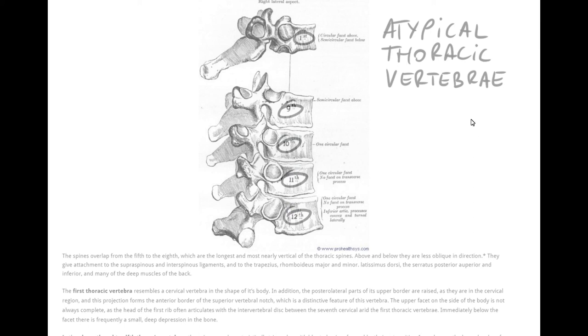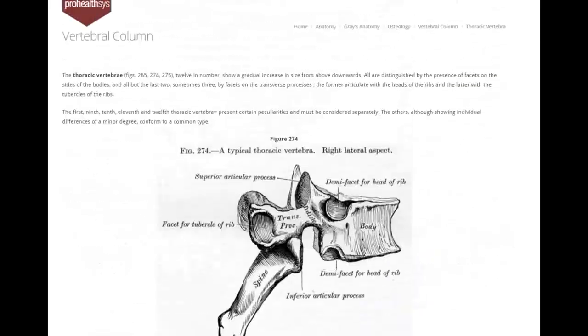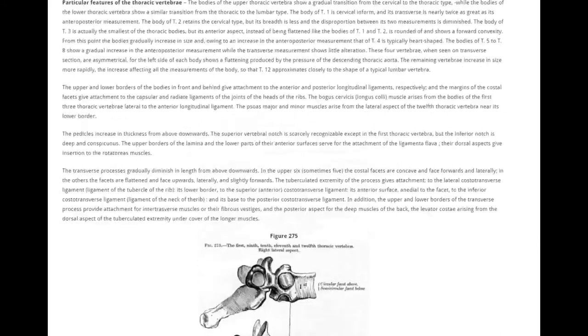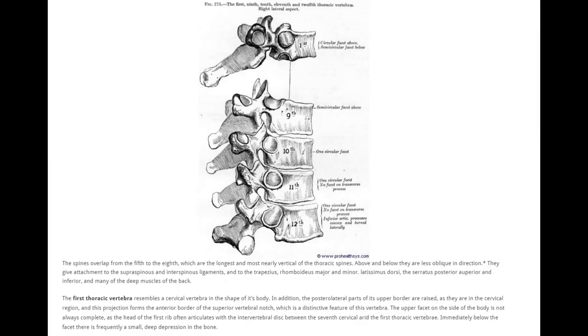This is it for this time. On our next video we will discuss ribs and how they articulate with thoracic vertebrae. Don't forget to check out ProHealth Systems homepage. All this information can be found on ProHealth Systems. All the images from Grey's Anatomy's textbook. A lot of very useful stuff. Subscribe to my channel. Subscribe to ProHealth Systems channel. If you found this useful share, like. Thank you for watching this and I'll see you soon.